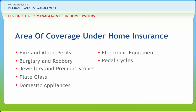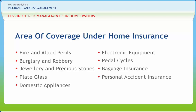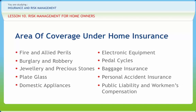Next is pedal cycles, which are commonly found on the road and exposed to maximum risk due to constant accidents. Next is baggage insurance: the current lifestyle includes a lot of touring, but there is always a strong possibility of losing your baggage during travel. Next is personal accident insurance, as accidents are sudden and often result in large financial implications. Next is public liability and workman's compensation: sometimes our actions can cause injuries or property damage to third parties, and coping with the liability can result in a large financial burden.